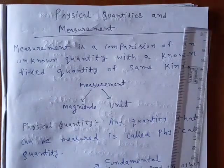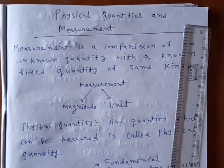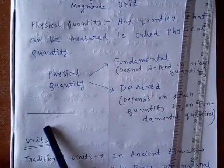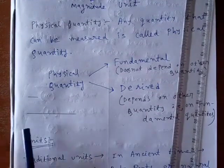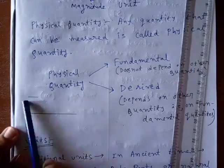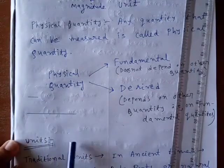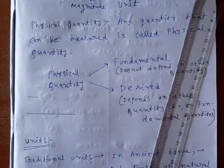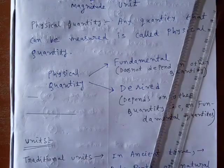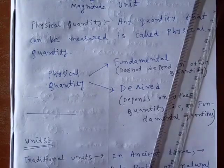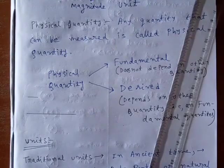Now let us first tell what is measurement? Suppose here you see two lines. If there is no unit or nothing, how can we tell that this is how much length and this is how much length? So there should be a fixed quantity that we can measure by comparing with that quantity.